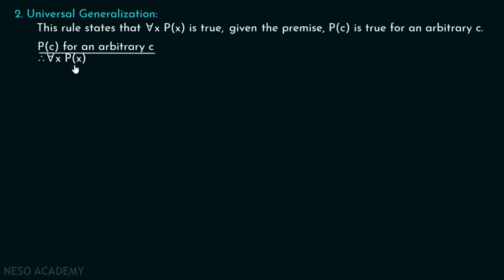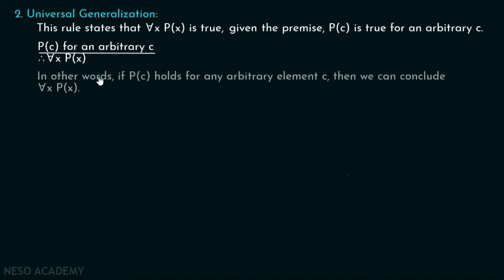You are considering an arbitrary, random c. If for some random c, P(c) is true, then for all x, P(x) has to be true. This is called universal generalization. In other words, if P(c) holds for any arbitrary element c, then we can conclude for all x, P(x). Let's discuss one problem to understand this in a better way.